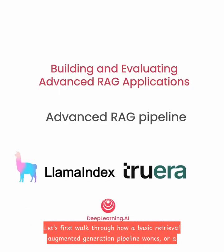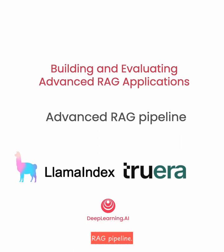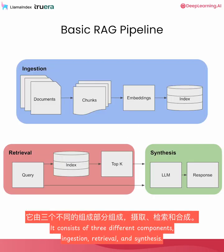Let's first walk through how a basic retrieval augmented generation pipeline works, or RAG pipeline. It consists of three different components: ingestion, retrieval, and synthesis.